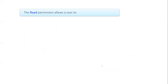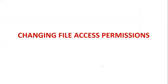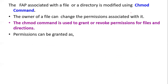Now we are going to see how to change the file access permission. To change the permission, you have to use another command called the chmod command — change mode. The particular file owner can change the permission associated with that particular file. The chmod command is used to grant or revoke permission for files and directories.